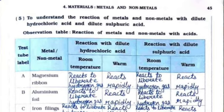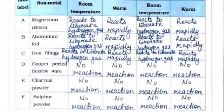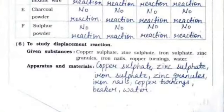Activity 5: to understand the reaction of metals and non-metals with dilute hydrochloric acid and dilute sulfuric acid. For example, magnesium ribbon reacts with both hydrochloric acid and dilute sulfuric acid. You can see from the table and complete all the metals and non-metals given.